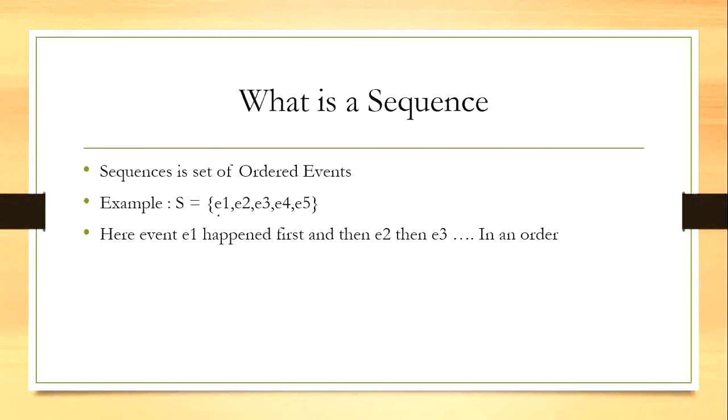Here all E1, E2, E3, E4, E5 are the events, and event E2 happens only after event E1, and event E3 happens only after event E2.